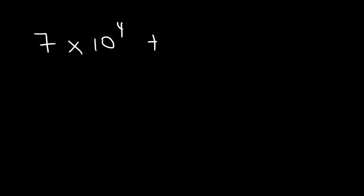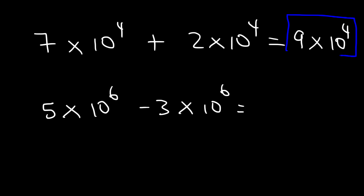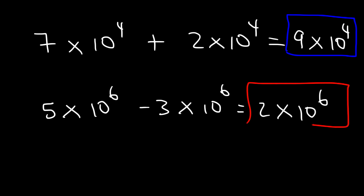Go ahead and try these examples: 7 times 10 to the 4 plus 2 times 10 to the 4, and 5 times 10 to the 6 minus 3 times 10 to the 6. For the first: 7 plus 2 is 9, so the answer is 9 times 10 to the 4. For the second: 5 minus 3 is 2, so the answer is 2 times 10 to the 6. That's a simple way to add or subtract two numbers in scientific notation.